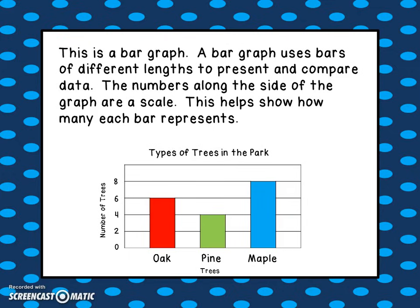The scale goes 0, 2, 4, 6, 8, and so on. At the bottom, there are oak trees, pine trees, and maple trees. Using the scale, you can see that the person who made this graph saw six oak trees, four pine trees, and eight maple trees. The bars help you figure out the values.